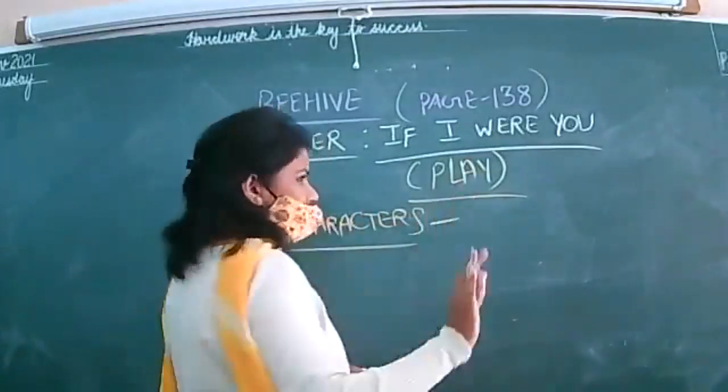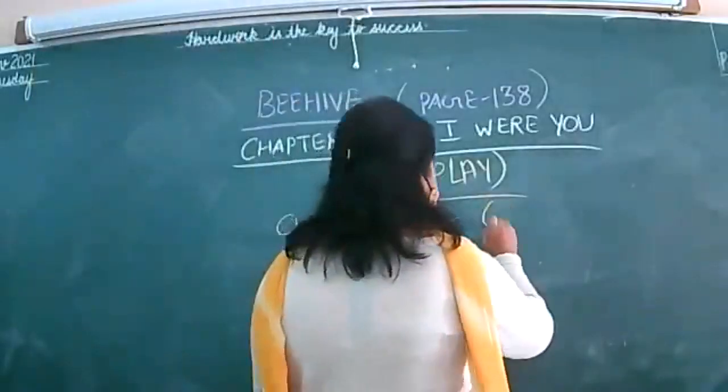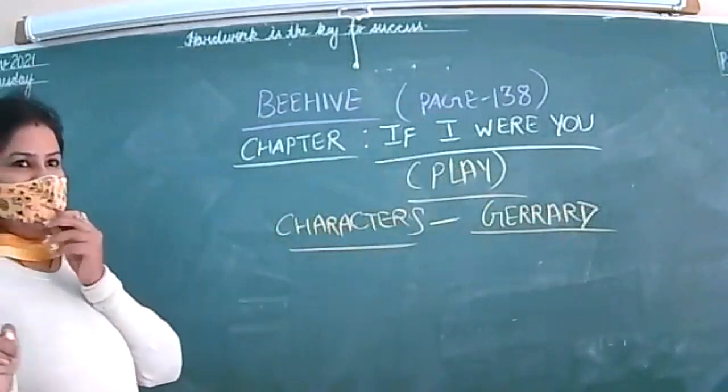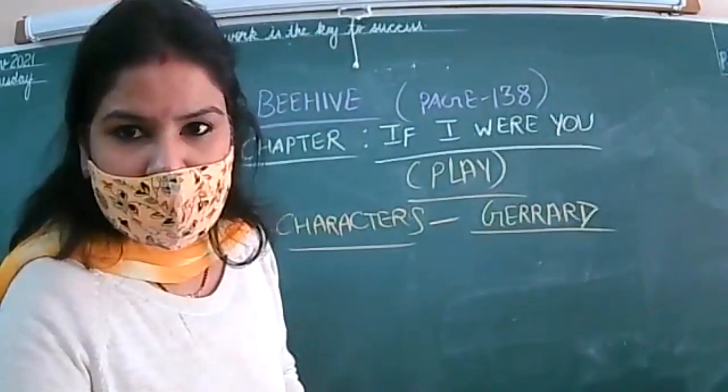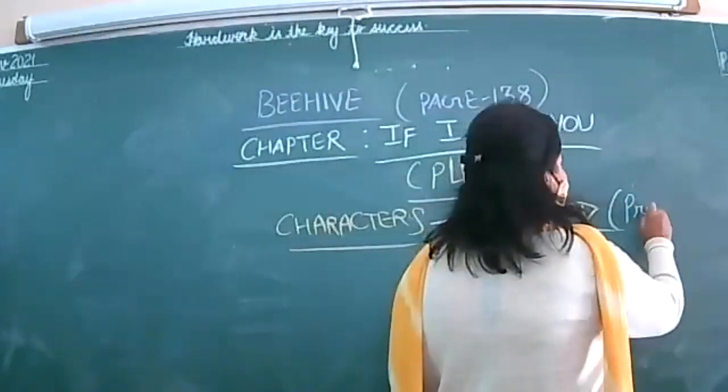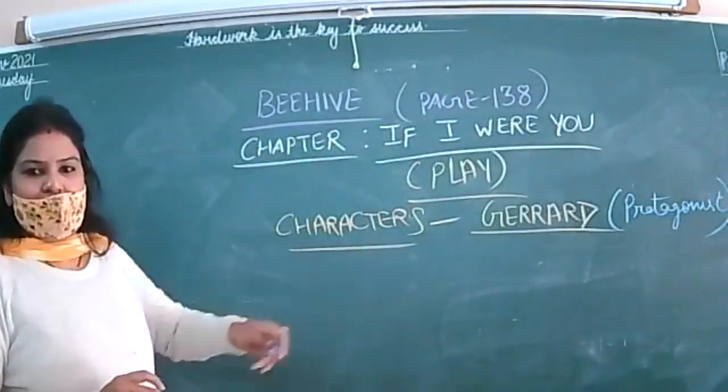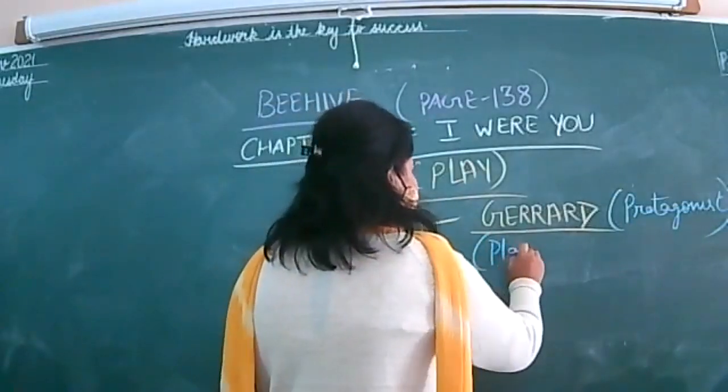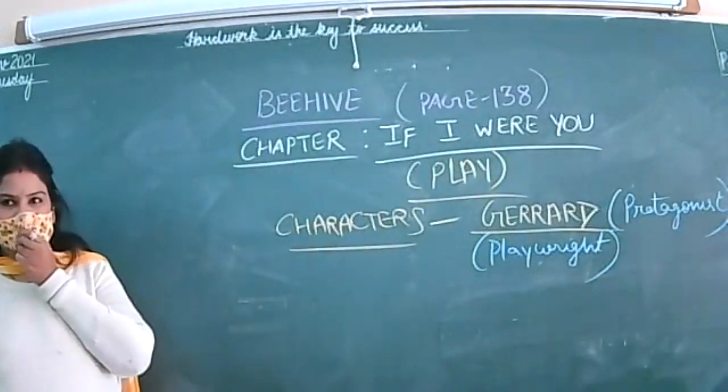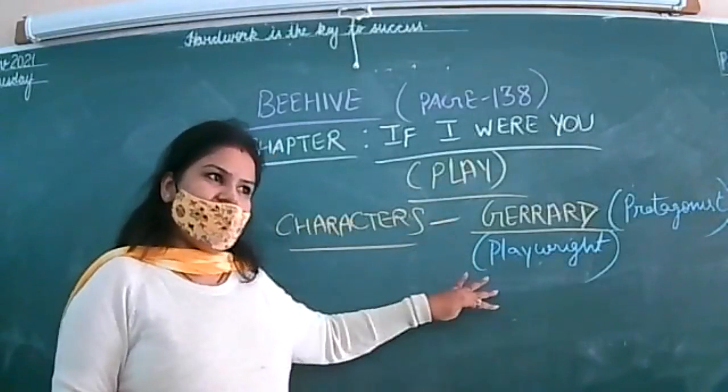Let me introduce the characters here. Basically, we have two characters. First and foremost, the protagonist of this chapter or play is Gerrard. So Gerrard, G-E-R-R-A-R-D, three times R I have named because many students write wrong spelling. So Gerrard is the protagonist, meaning the main character of the story. Let me tell you about this character only. What is he playing in the story? He is playing the role of a playwright. Playwright. In very simple language, he is a writer. He writes stories only. This is his character in the play.